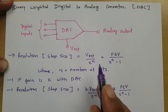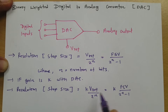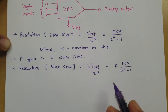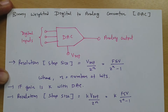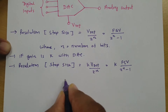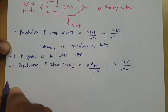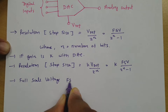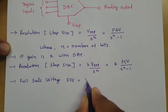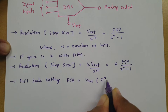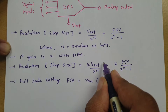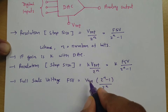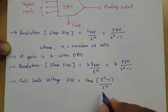Based on the resolution formula, we can calculate the full scale voltage. This will be explained with respect to the binary weighted digital-to-analog converter. Comparing the formulas, full scale voltage equals V_reference multiplied by (2 to the power n minus 1) divided by 2 to the power n. Here K cancels out and 2 to the power n moves to the numerator, giving V_reference into (2^n − 1) / 2^n as the full scale voltage.